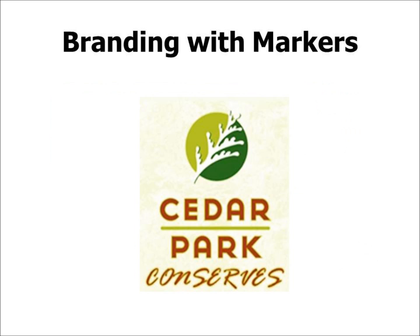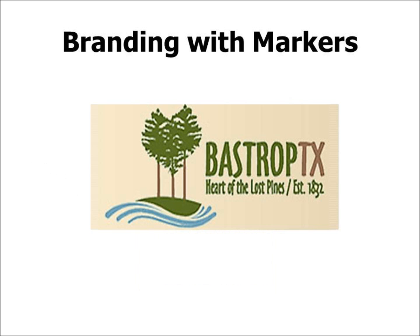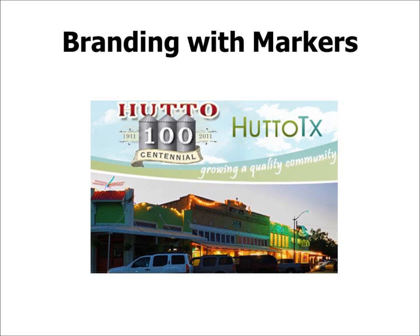Cedar Park's brand 'Cedar Park Conserves' tells you about the values important to its residents. Bastrop builds upon its most prominent features — the river and the famous pine trees — with the brand 'Bastrop Texas, Heart of the Lost Pines, Established 1832,' providing a history and geography lesson. Hutto, Texas uses 'Growing a Quality Community,' and interestingly incorporates three prominent grain elevators into their logo — something worth considering for a place like Lockhart, which has a prominent grain elevator and famous courthouse.